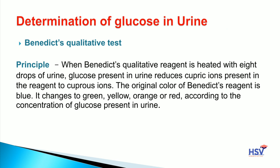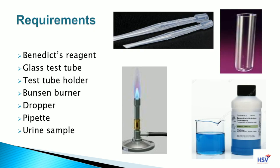Benedict qualitative test — Principle: When Benedict qualitative reagent is heated with 8 drops of urine, glucose present in urine reduces cupric ions present in the reagent to cuprous ions. जो glucose present है urine में वो cupric ions को cuprous ions में reduce करता है। The original color of Benedict reagent is blue. It changes to green, yellow, orange, or red according to the concentration of glucose present in urine.